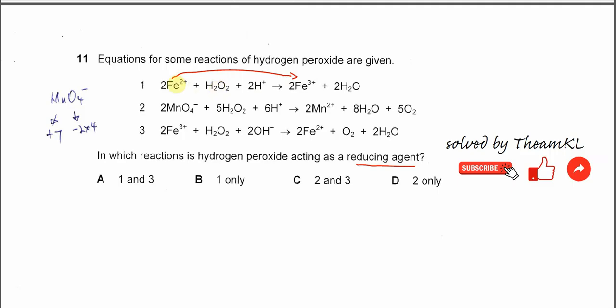Because iron 2 is oxidized to iron 3 from positive 2 to positive 3, the first reaction is not the answer.